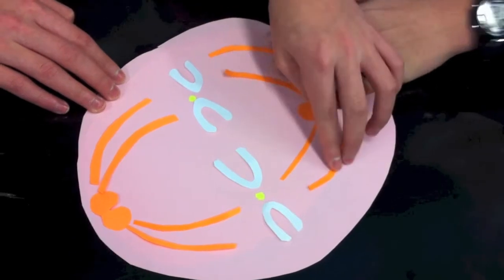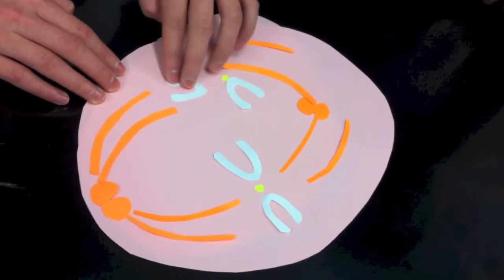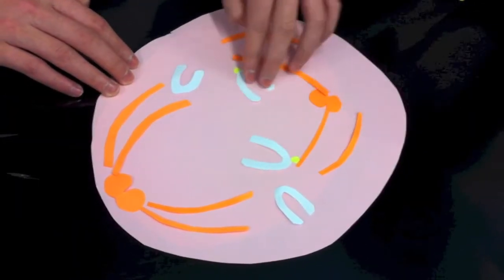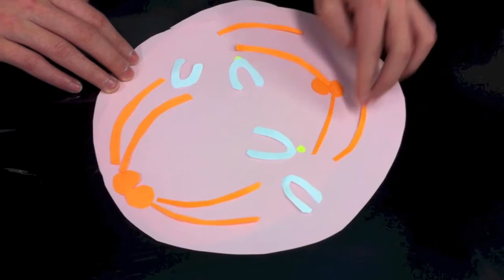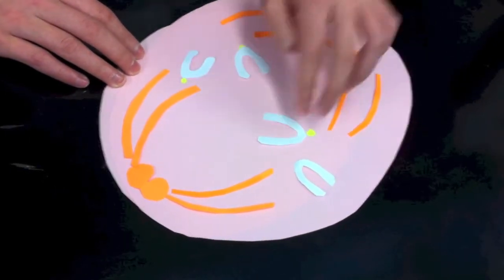The cell then undergoes anaphase, in which the continued contraction of the spindle fibers pull the chromosomes apart at the centromere, forming sister chromatids that are pulled towards the opposite poles of the cell. Each sister chromatid is now considered to be a chromosome.